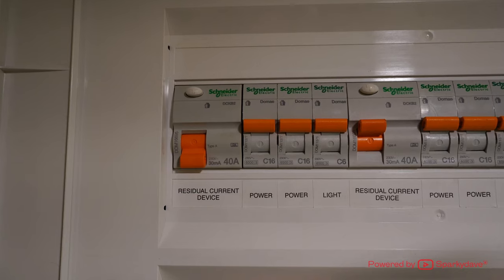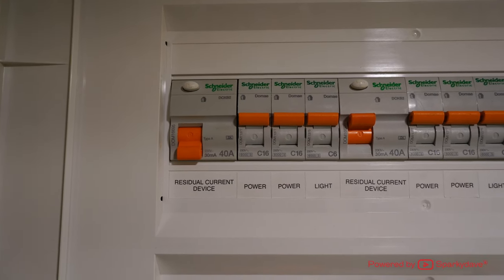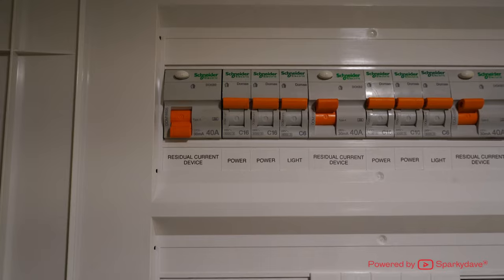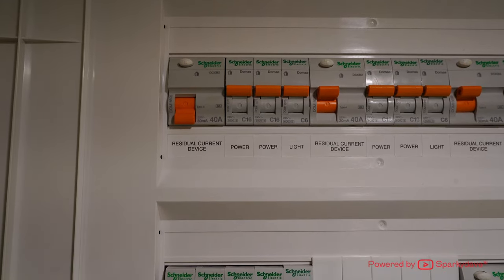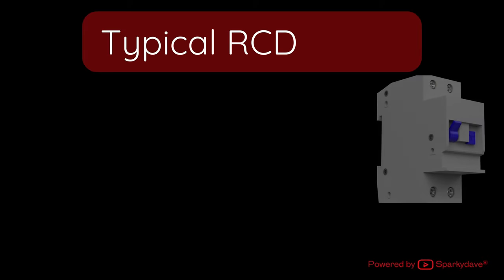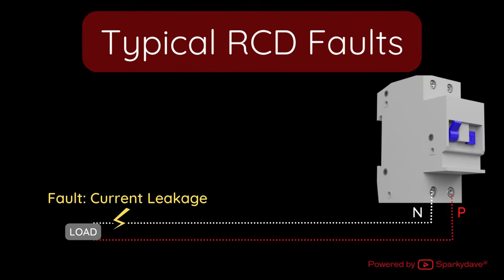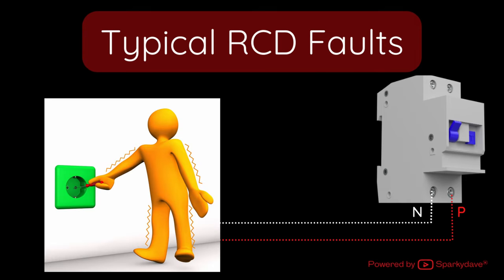Where the RCD has tripped without a circuit breaker, this would generally suggest a neutral cable connection or appliance has failed somewhere in the house. This is a typical RCD fault, which means that current is not returning through this RCD at the switchboard and is leaking out of the circuit. The fault is likely an electric shock hazard for a person, given the RCD has operated.